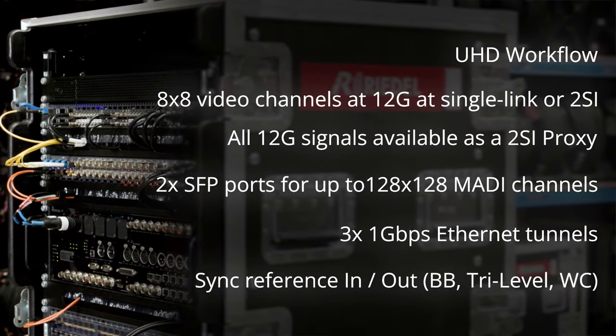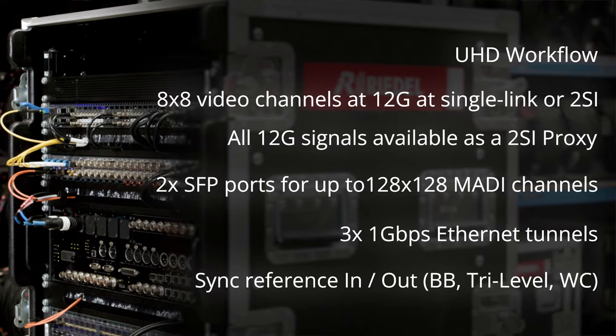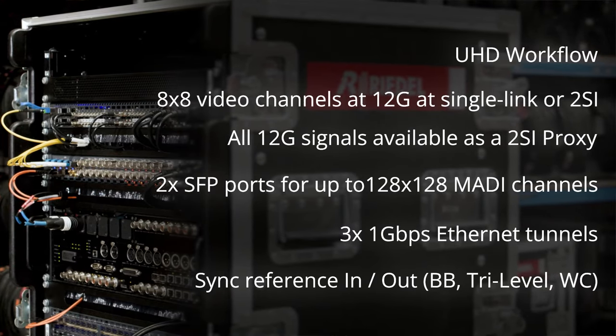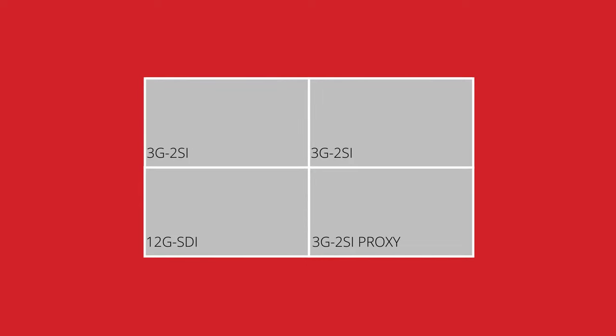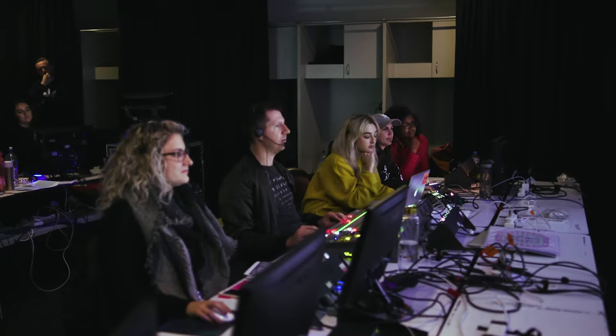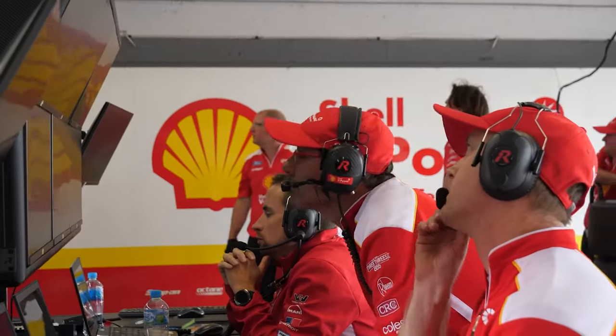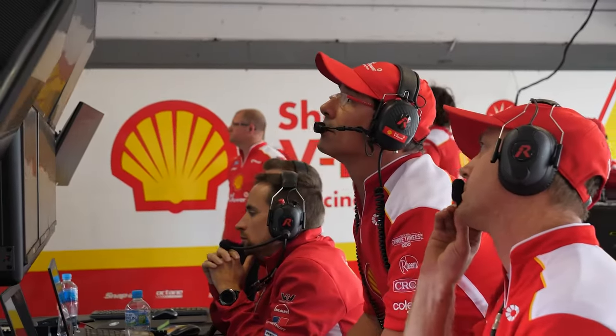The MediaWorks software allows you to freely route between single-link 12G and 2SI. In addition, all UHD sources in the MediaNet network are available to be routed as a 3G 2SI proxy, which is perfect for monitoring or multi-view applications.